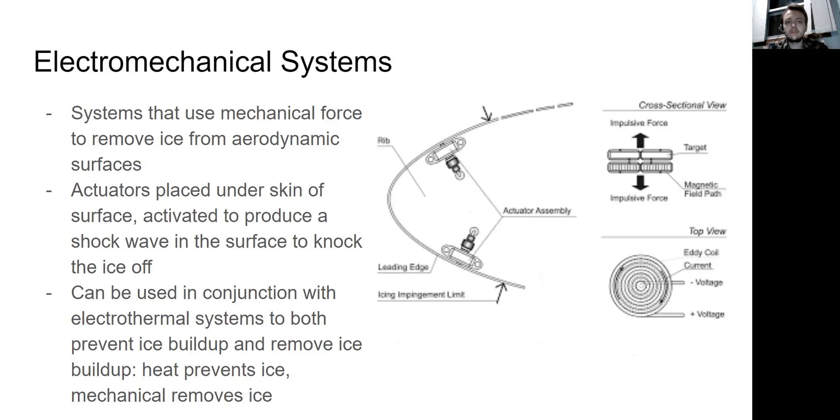Electromechanical systems are systems that use mechanical force to remove the ice from aerodynamic surfaces. So actuators, as shown here, this is the leading edge of a wing. Actuators are placed under the skin of a surface and then they're activated, which produces a shock wave in the surface of the aerodynamic surface. And this shock wave will knock the ice off of the surface itself. These actually can be used in conjunction with electrothermal systems to both prevent ice buildup and remove ice buildup because heat will prevent the ice from happening in the first place. But if it starts to build up, the mechanical system removes the ice by knocking it off the wing.